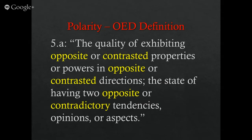By definition — this is from the Oxford English Dictionary — polarity is the quality of exhibiting opposite or contrasted properties or powers in opposite or contrasted directions, the state of having two opposite or contradictory tendencies, opinions, or aspects. The most important part of this definition is that it's simply the study of opposites — when things are reversed, in opposition, contrasted, or at their bare basics, opposites.